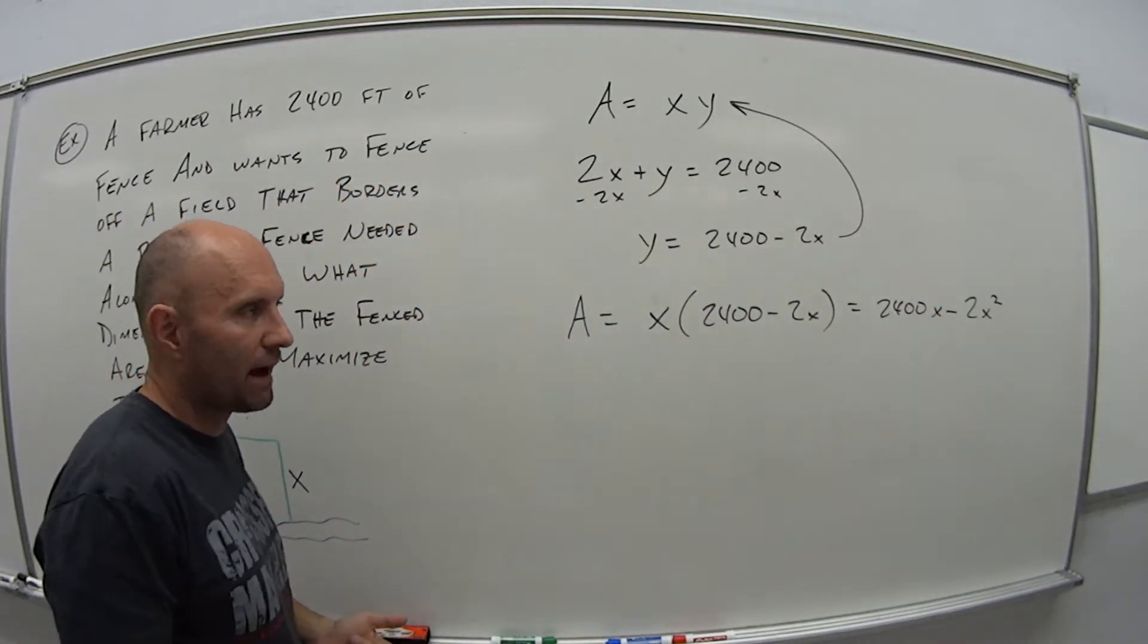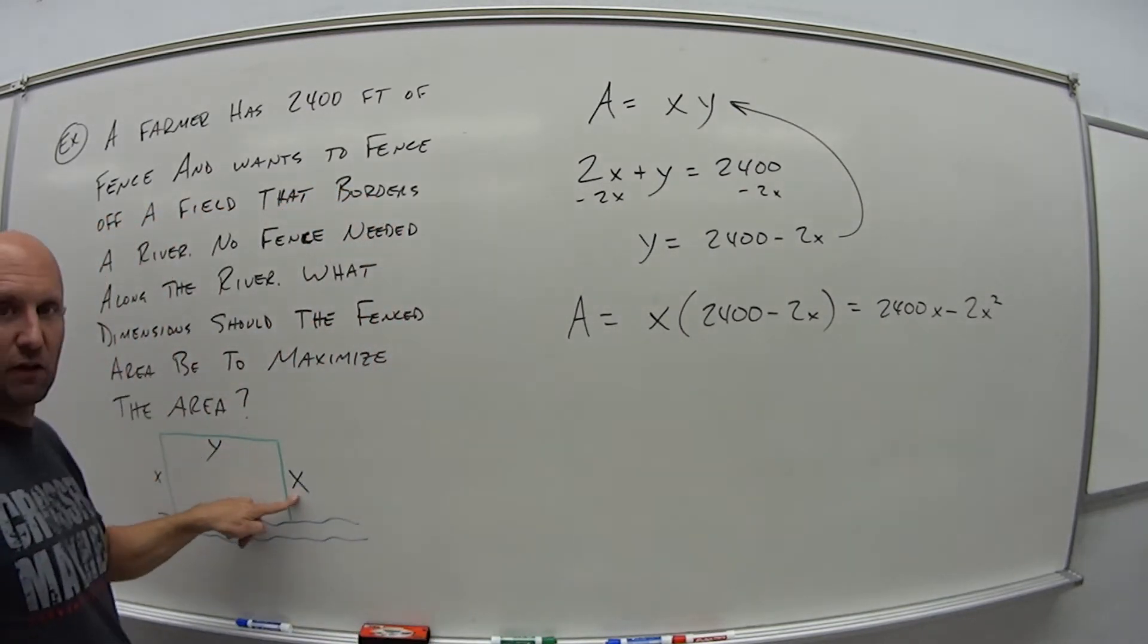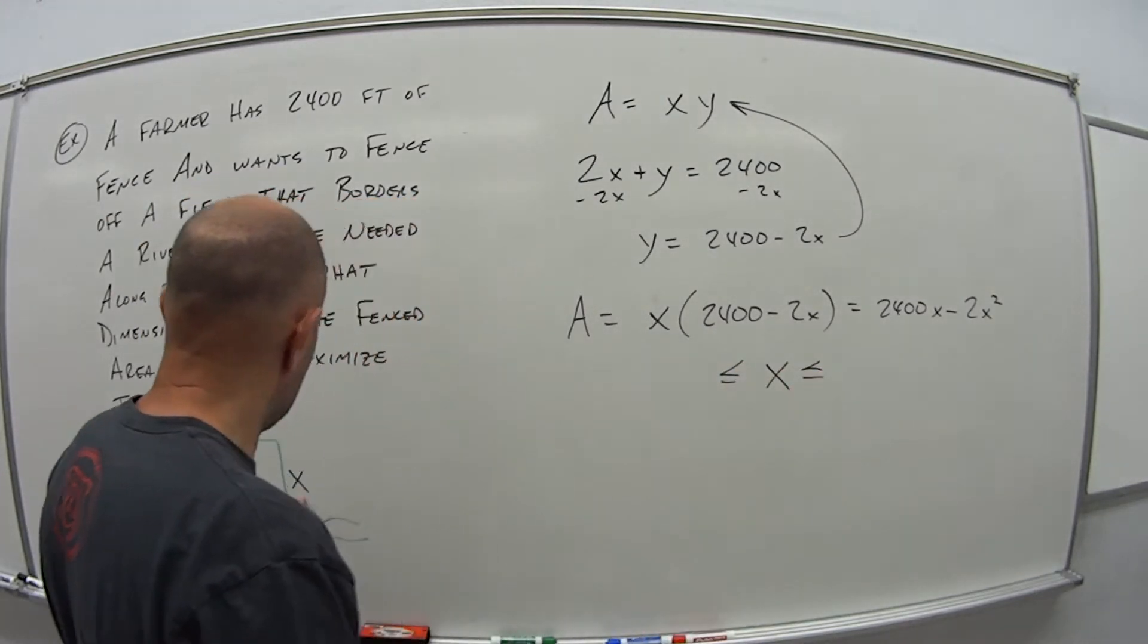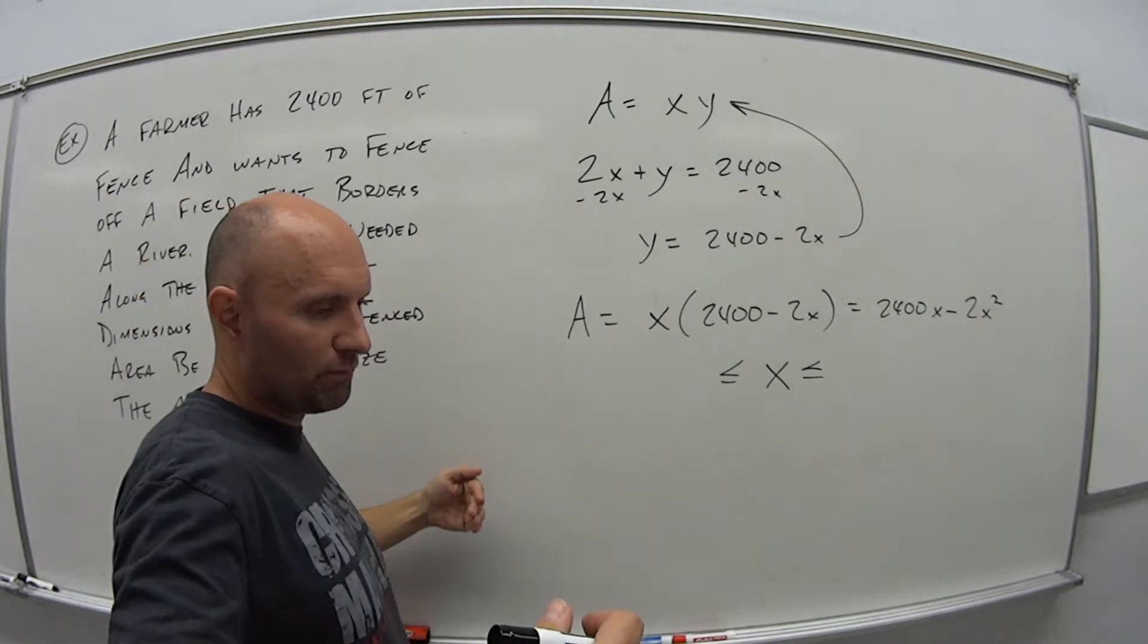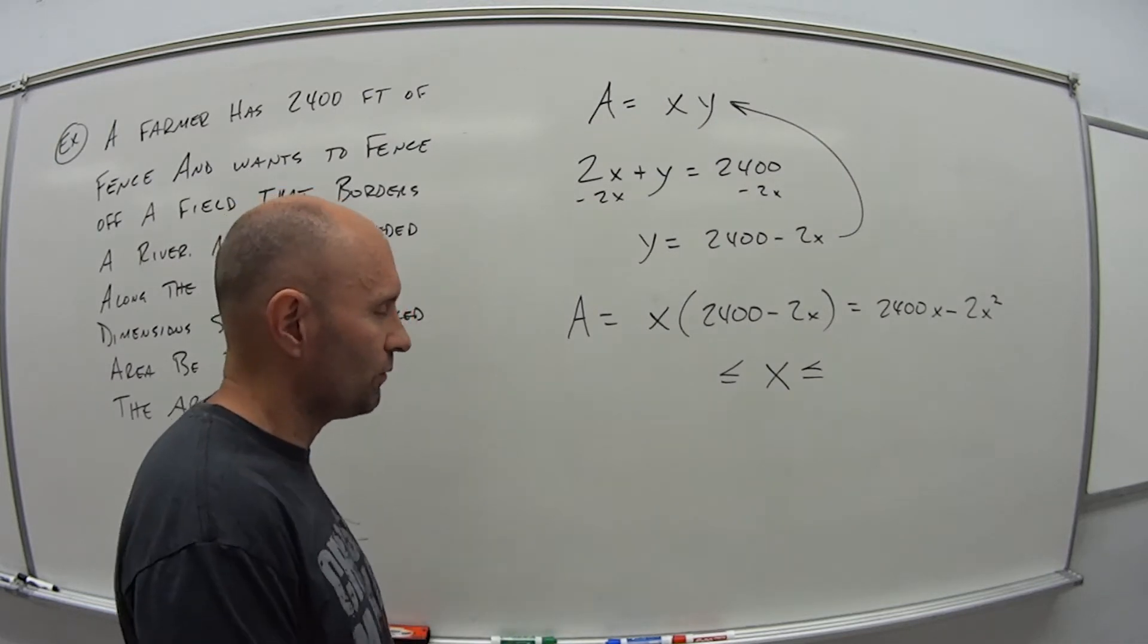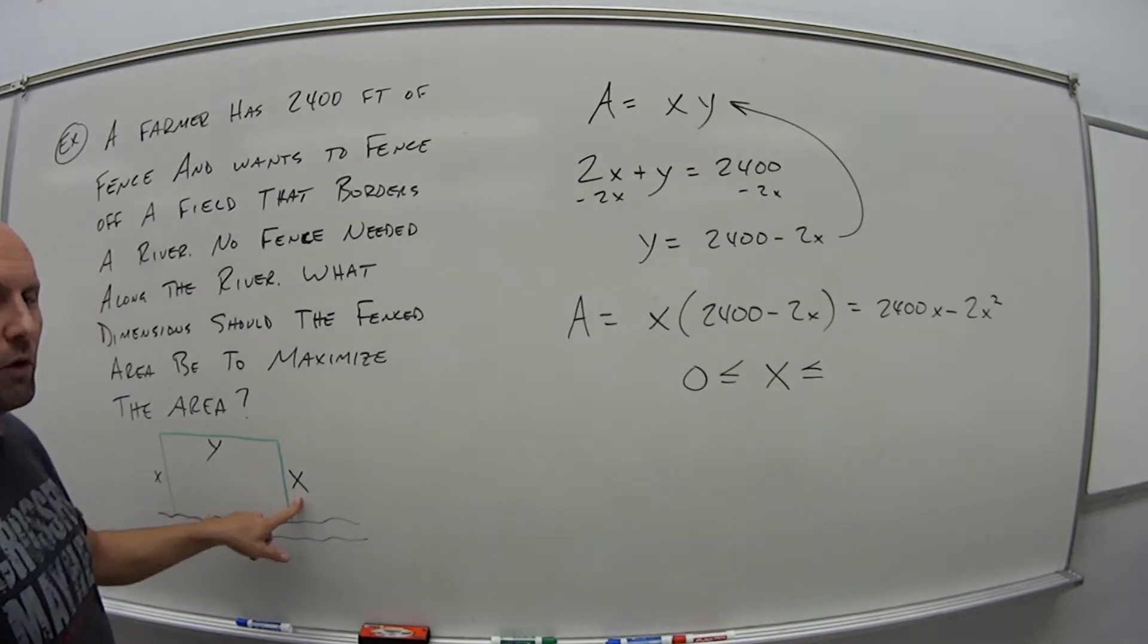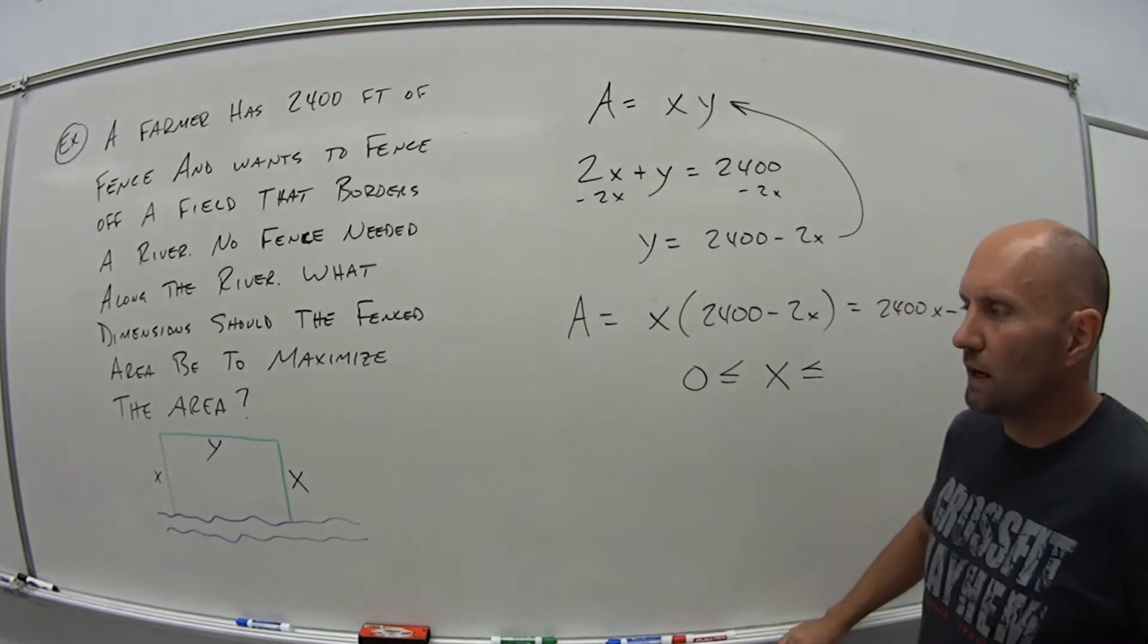I do that how? Oh, I need to set up the domain, right? Well, what's the smallest value x could be? So I want to know x is between what potential values? Well, the smallest x could be is zero, right? I don't come away from the water at all. I just line up 2,400 feet of fence right along the river. It's not going to really help me much, but that is technically the smallest value.